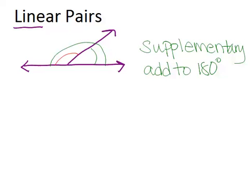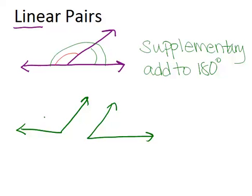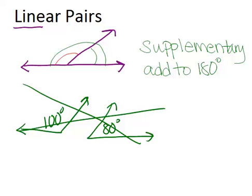The two angles that form a linear pair must be next to each other. This means that they must share a common ray. For example, these two angles, while they might be supplementary, perhaps they do add up to 180 degrees, if this one was 100 and this one was 80 degrees, these two angles are not a linear pair because they do not share a common ray. So to be a linear pair, we have to have this common ray here. So the two angles have to actually be on the same line.